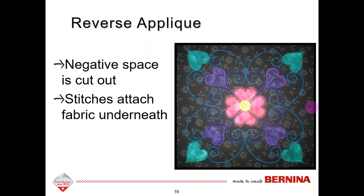With reverse applique, this is one of the kinds where you don't need two files, because you're cutting out the background fabric. In the center here where you see the pink hearts, the background fabric was cut out and then a piece of fabric was put underneath the hoop. These pieces were then attached with a decorative stitch around the hearts, so in this case only one file is needed.